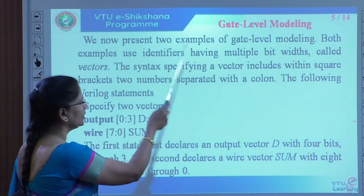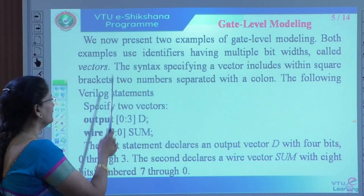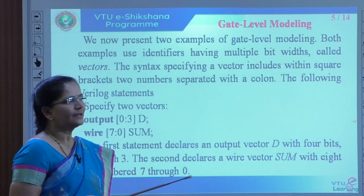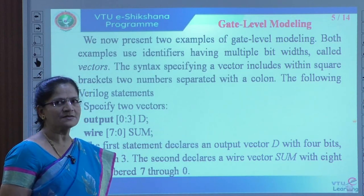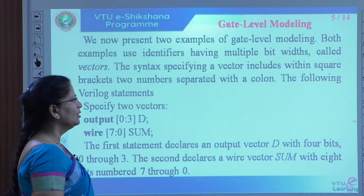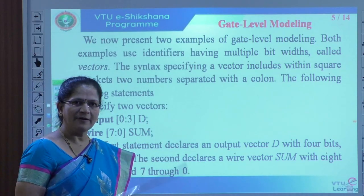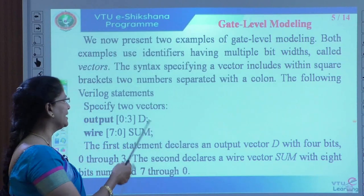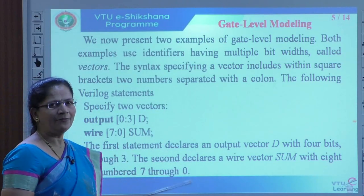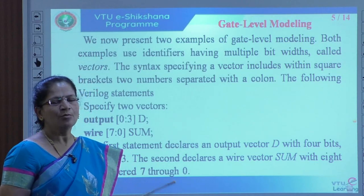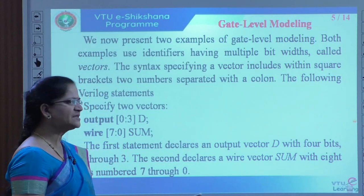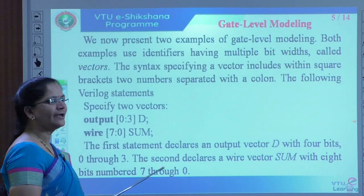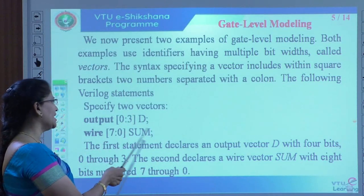Here we have two different types of gate level modeling. We are taking an example. You have already implemented gate level modeling with user-defined as well as predefined primitives, as covered in Module 1. Still, there is more we can do in the implementation. For example, if you have any inputs or outputs of more than one bit, then we will represent them with either an array or a vector.